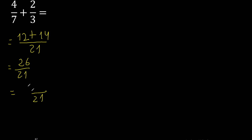The same number here: 21 multiplied by which number is nearest to 26 but not greater? 21 multiplied by 2 is 42, which is greater. 21 multiplied by 1 is 21, which is not greater.